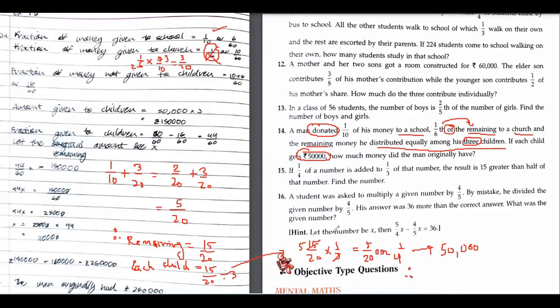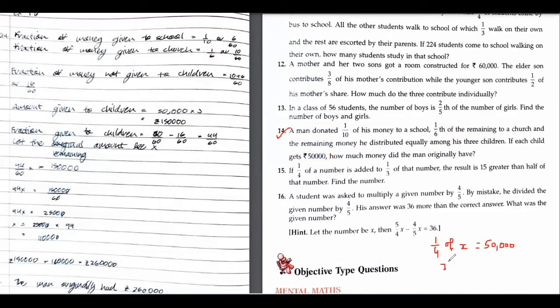So therefore, can I write, if I take the total value be x. Let total money be x. That means 1 upon 4 of total is 50,000. So after that, x equals to 50,000 multiplied by 4. And that's 2 lakh for us.